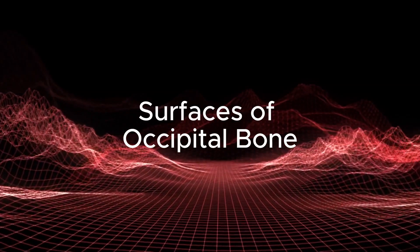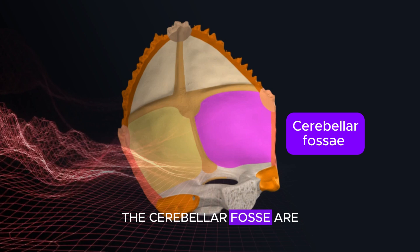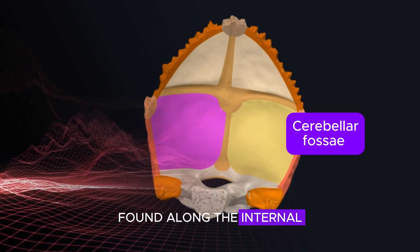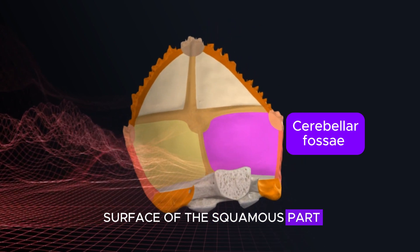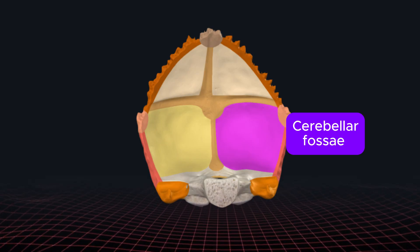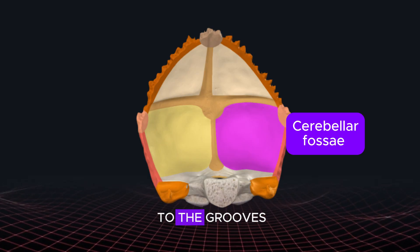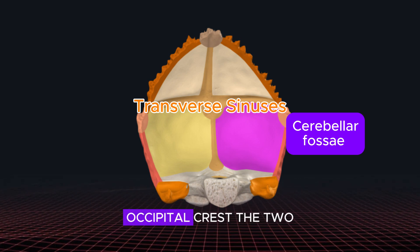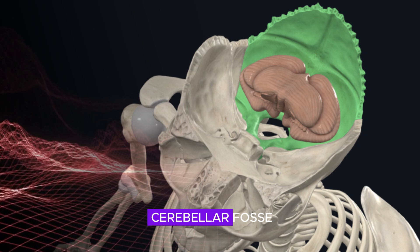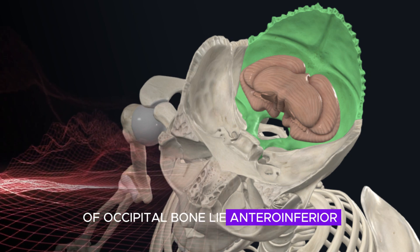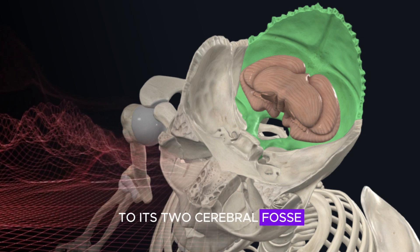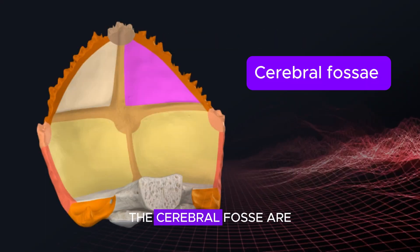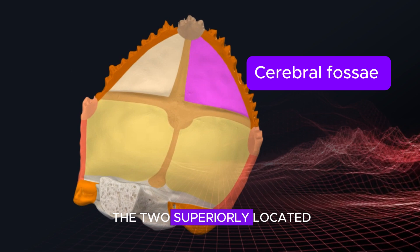The cerebellar fossae are the two inferiorly located quadrilateral depressions found along the internal surface of the squamous part of the occipital bone. They are located inferior to the grooves for the transverse sinuses and are separated from each other by the internal occipital crest. They accommodate the hemispheres of the cerebellum.